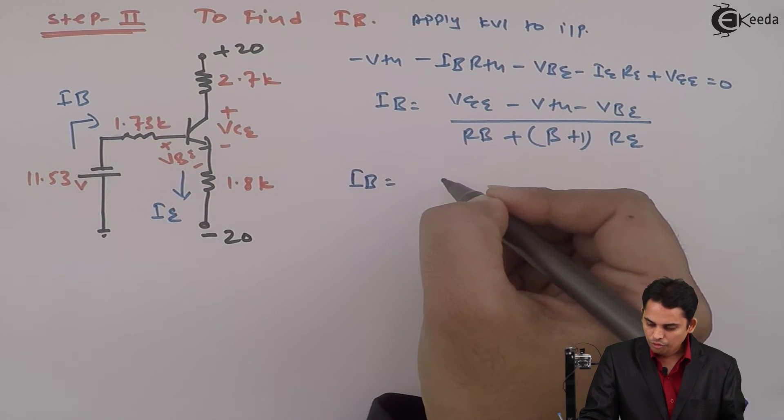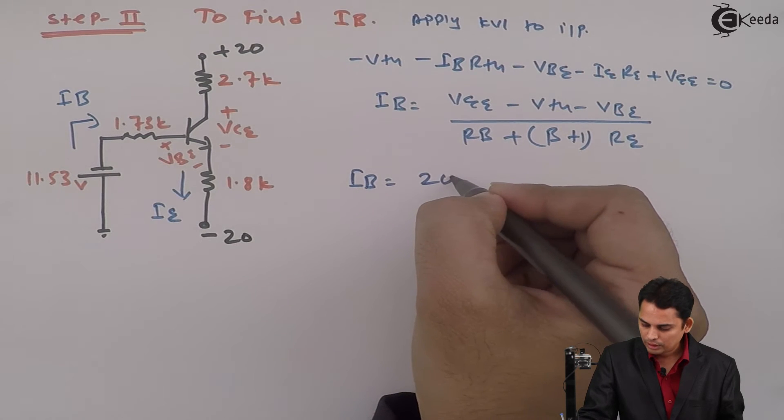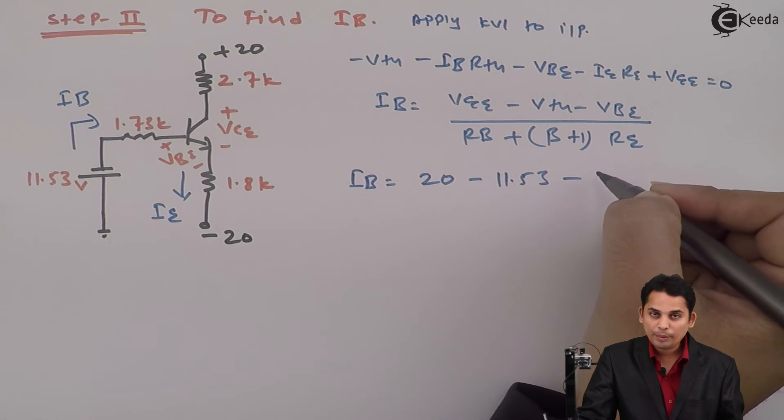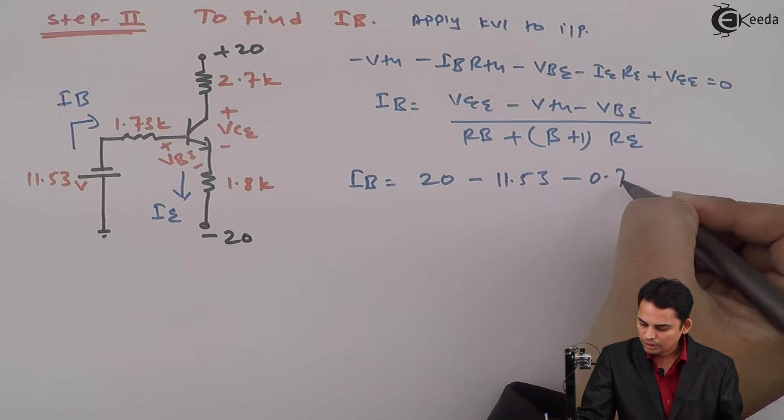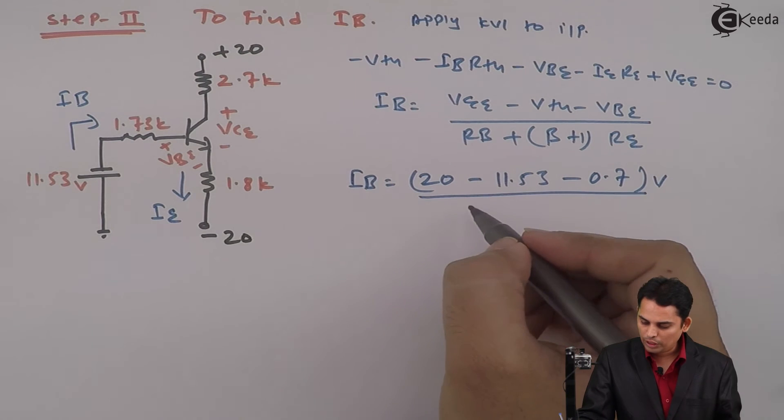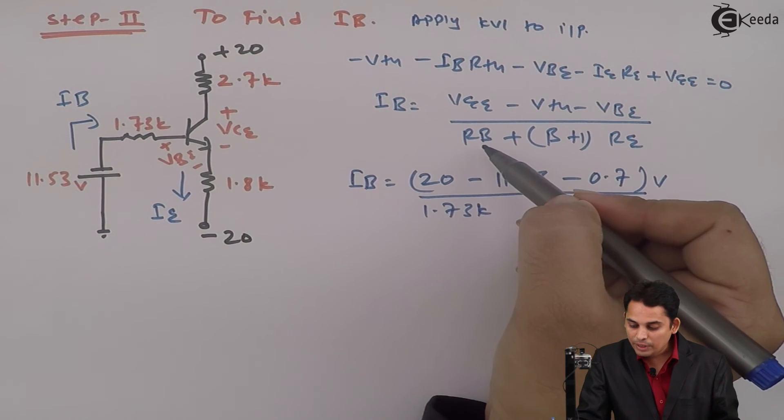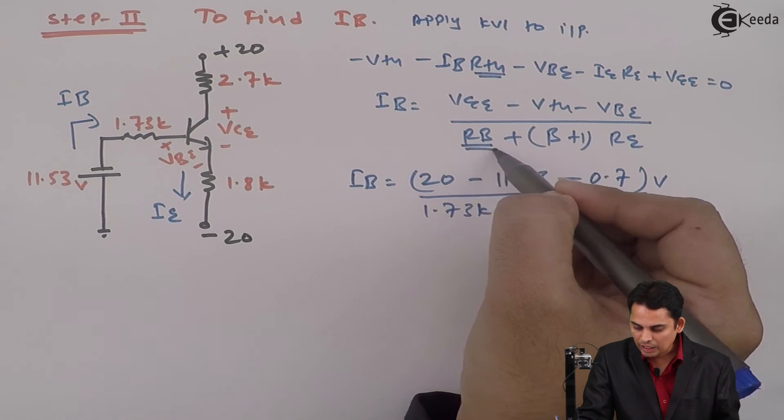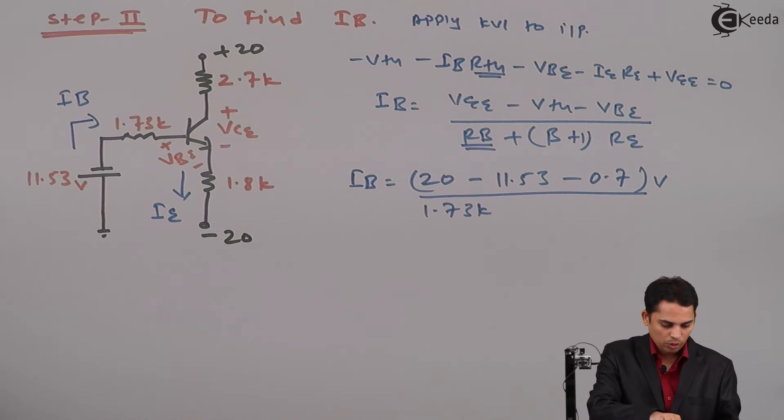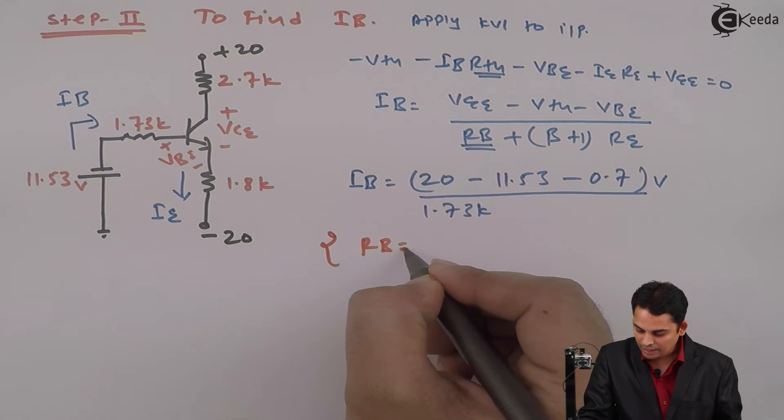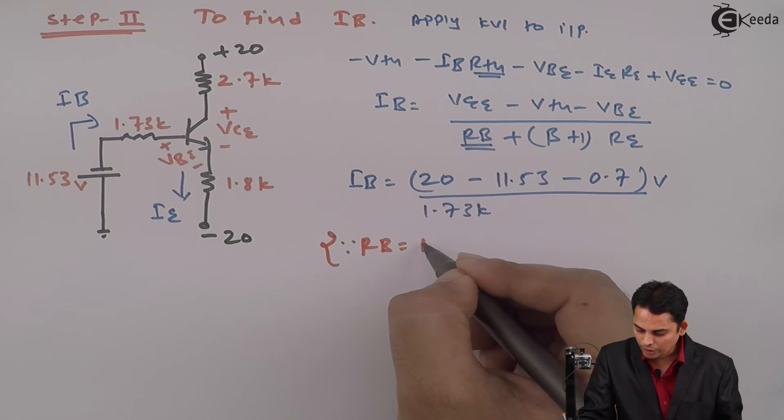So IB is equal to VEE is 20 volts minus Vth is 11.53 minus Vbe is 0.7 volts divided by Rb is equal to 1.73K, where Rb is nothing but Rth.